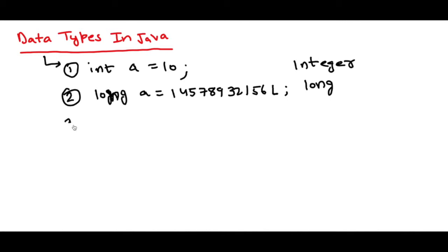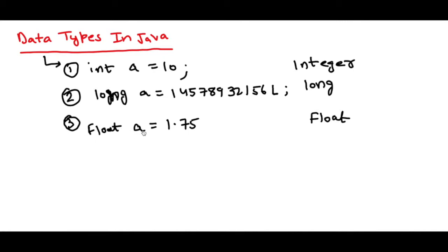The third data type is float. Float is a data type used if you want to store decimal numbers. For example, if you want to store 1.75, you'll have to use float as the data type. Similar to long variables where you use L at the end, for floating type variables you'll have to use the character F in the end. So float A equal to 1.75F will store the decimal number 1.75 in variable A.